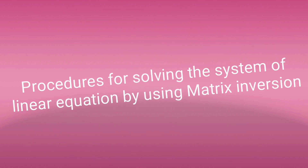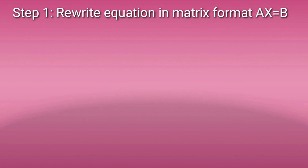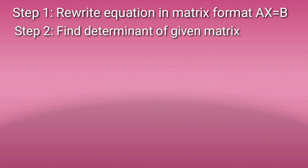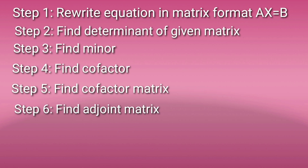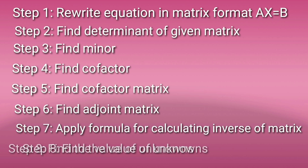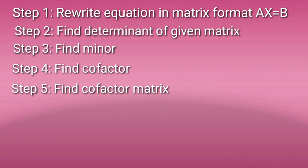To summarize, the stepwise procedure for solving a system of linear equations using the inverse of a matrix is: first, rewrite the given equations in matrix format AX = B; second, find the determinant of A; third, find the minors; fourth, find the cofactors; fifth, form the cofactor matrix; sixth, find the adjoint by taking the transpose of the cofactor matrix; seventh, compute the inverse; and finally, multiply the inverse of A by the constant matrix B to find the unknown variables. The most important use of the inverse of a matrix is to solve systems of linear equations.